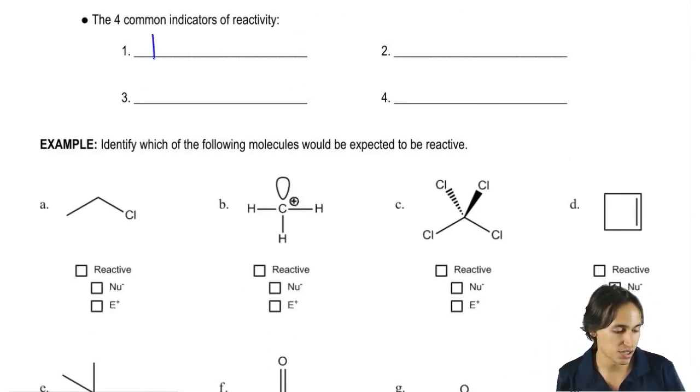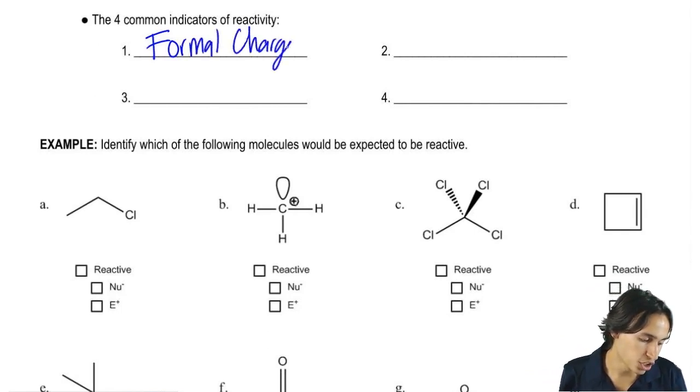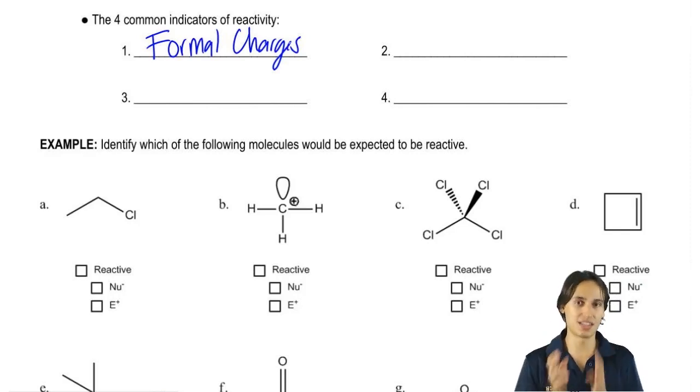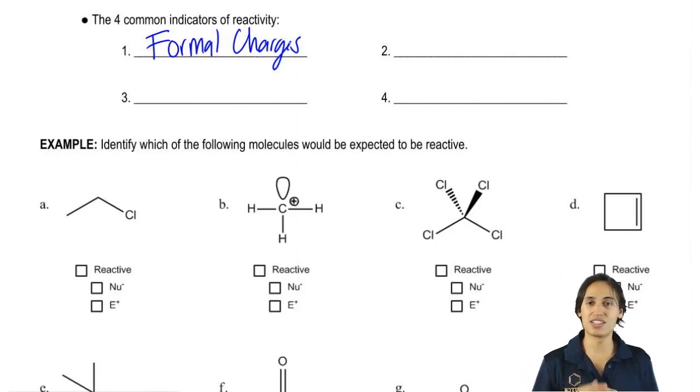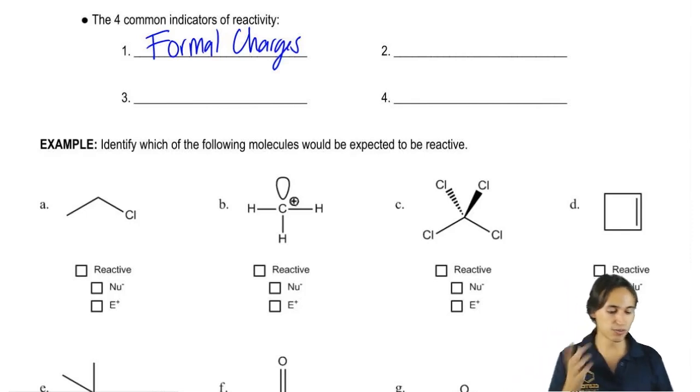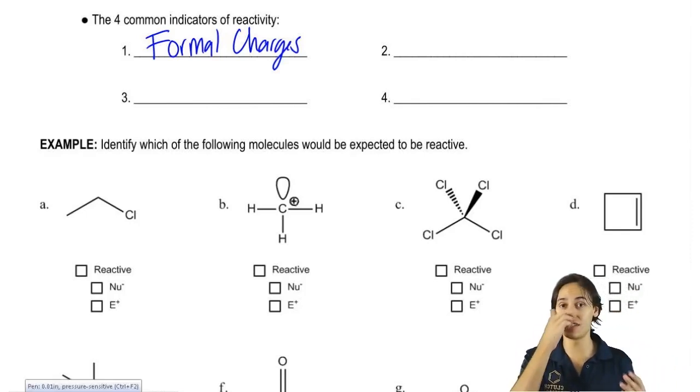The first one is formal charges. You guys remember those? Formal charges mean that an atom is not at its ideal bonding preference. It has too many or too few valence electrons. Remember the sticks and the dots. What that means is that it's going to try to do anything in its power to try to go back to its bonding preference. That means it has a very big reason to want to react to something else. If it can get rid of some electrons, maybe it can go back to the state that it wants to be in. Does that make sense? That's the first one. If you see a formal charge, you know that this is going to be reactive.